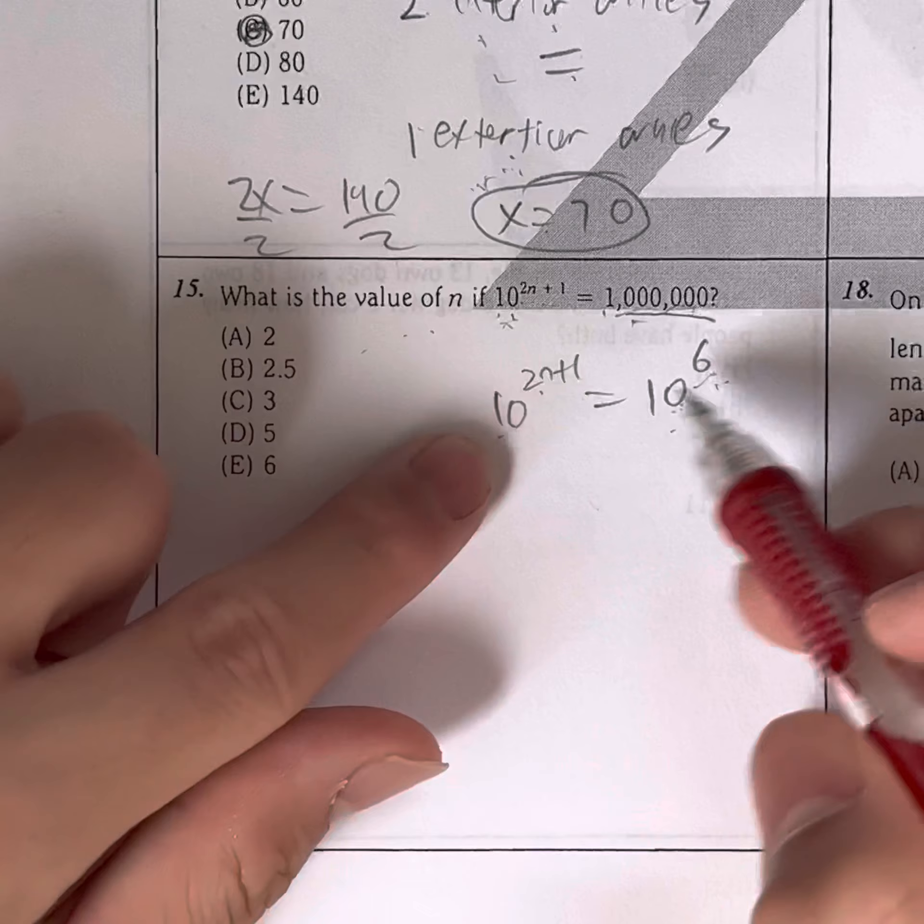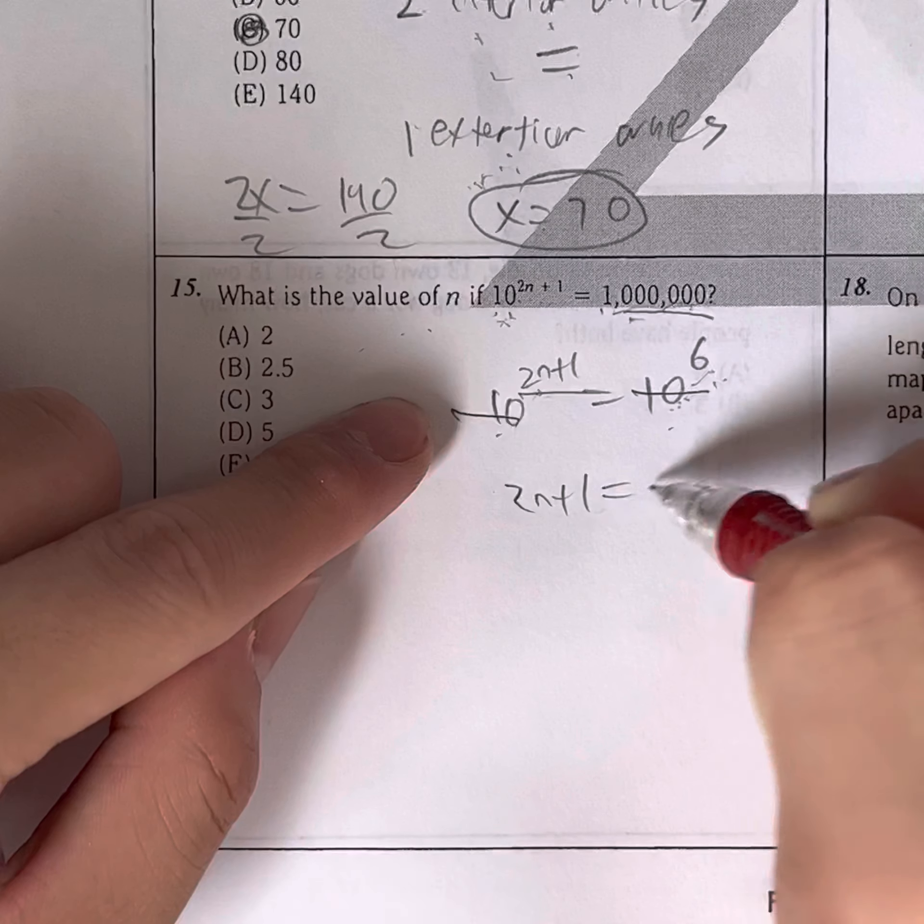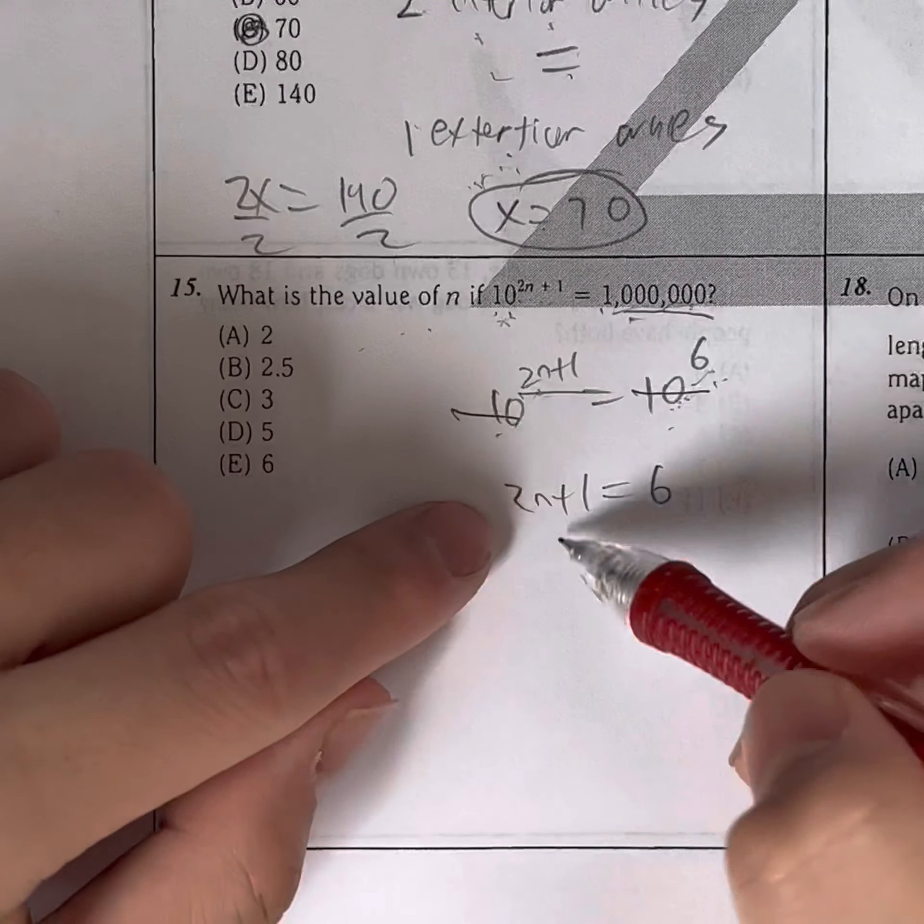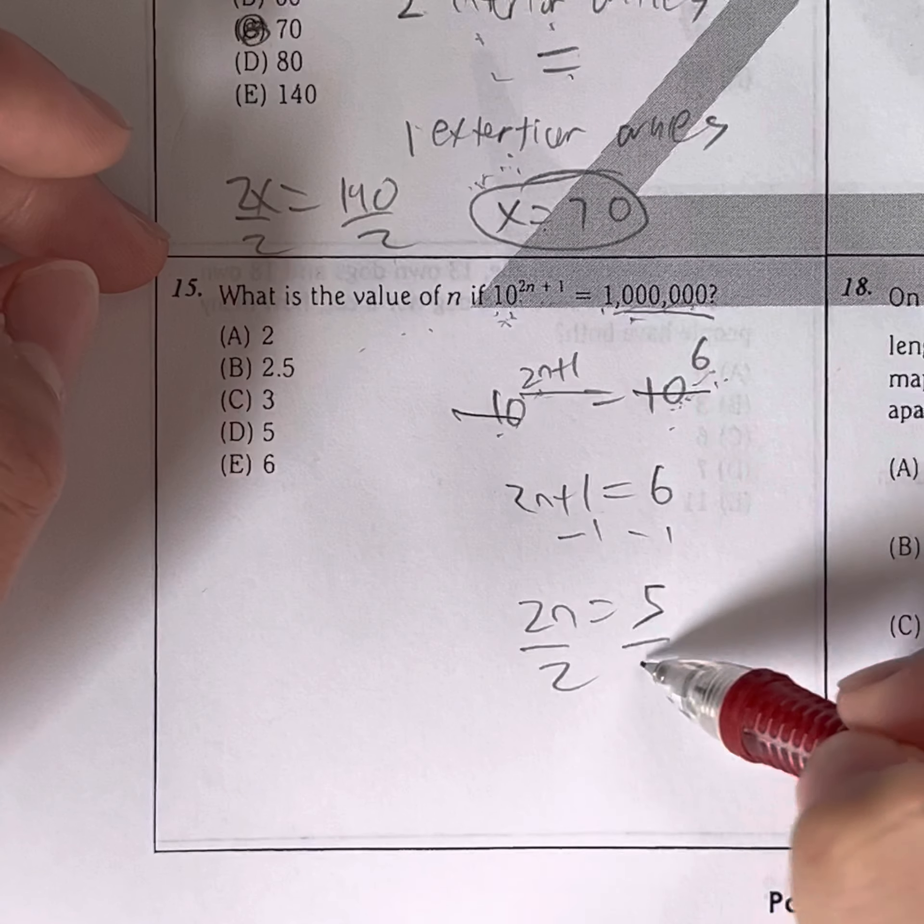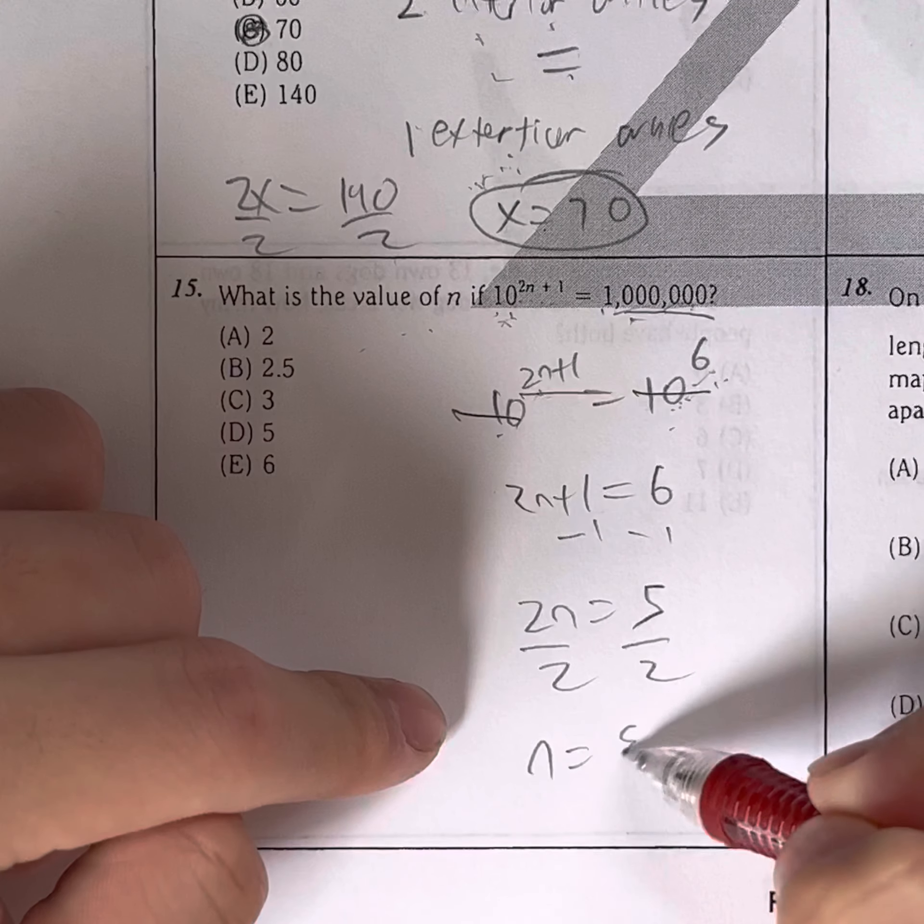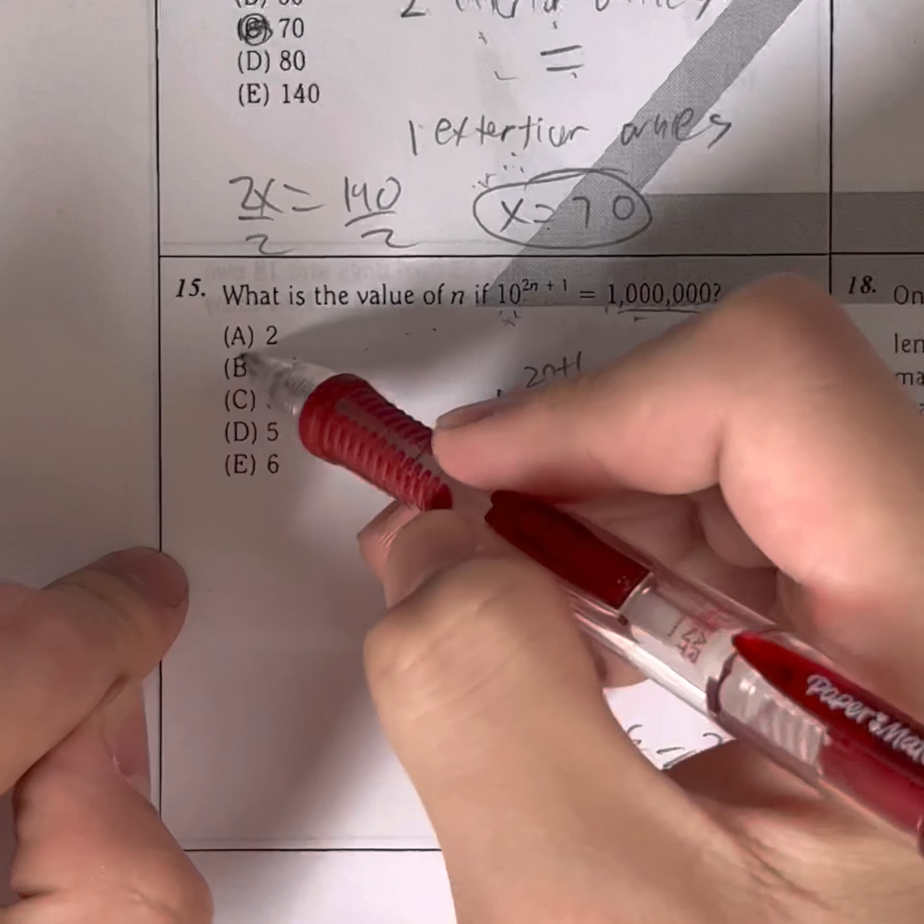So now, 10 to the something is equal to 10 to the something. To cross out the tens, we just solve for 2N plus 1 equals 6. We have to make them equal. Minus 1 on both sides, 2N is equal to 6 minus 1, which is 5. Divide both sides by 2, giving us N is equal to 5 over 2, which is the same as 2.5. Meaning the answer has to be B.